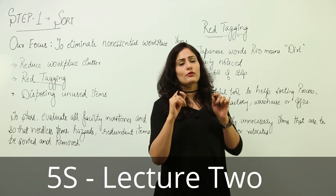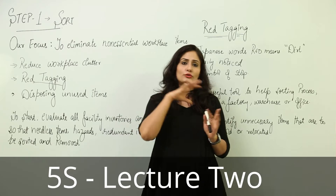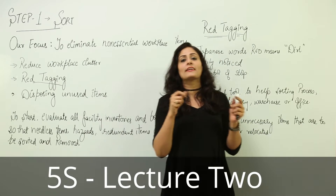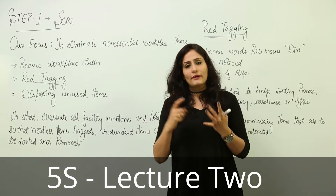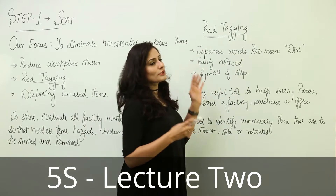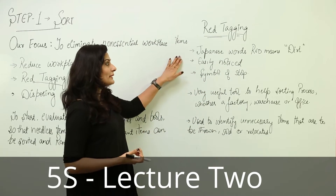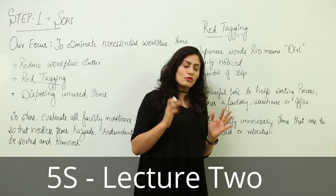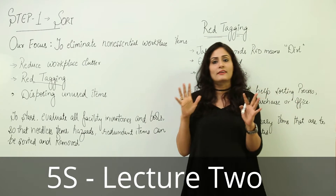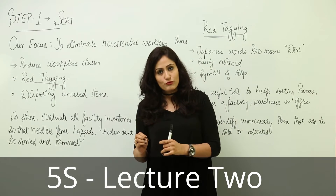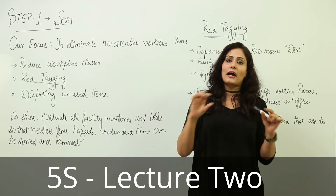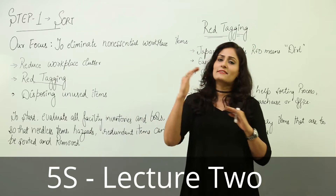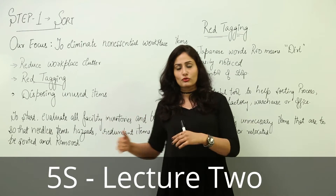In step one we use red tagging as a visual control tool. What is red tagging? When you go to the airport, they put a tag on your luggage — a red tag is similar to those tags, just red in color. Why red? First, 5S is a Japanese tool, and in Japanese, red means dirt. Red is also easily noticed, and it's a symbol for stop. So red tags are used to find items that are not working properly or need to be disposed of or fixed.